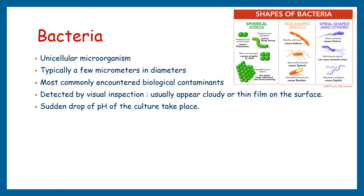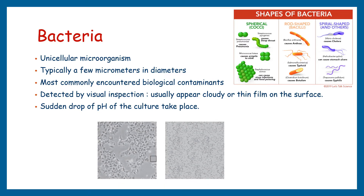In bacterial contamination, there will be a sudden drop in pH of the culture medium. When you observe your culture under a low-power microscope, the bacteria appear as tiny, moving granules between the cells, and observation under a high-power microscope, you can resolve the shapes of individual bacteria. These images showed an E. coli contamination in adherent T-93 cell culture.